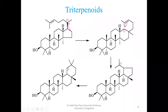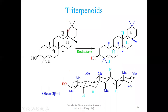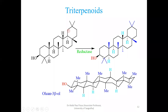This is the synthesis of triterpenoids. Similarly, this molecule can undergo the action of a reductase. The product exists as a six-membered ring system — six, six, six, six, six — one, two, three, four, five rings. This is called a pentacyclic triterpenoid — a five-ring pentacyclic triterpenoid.